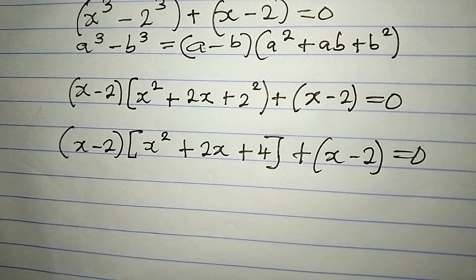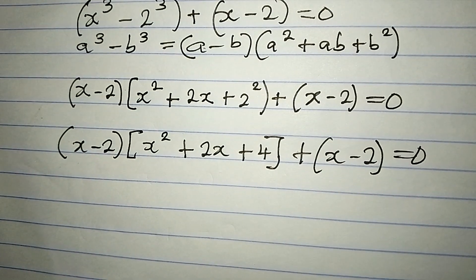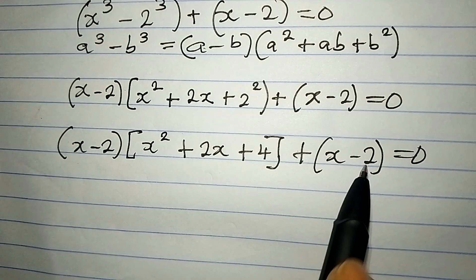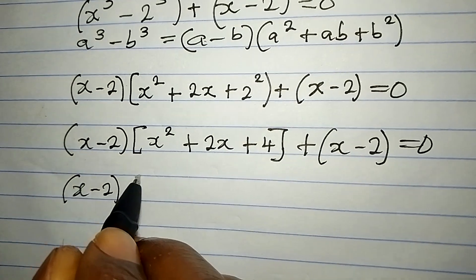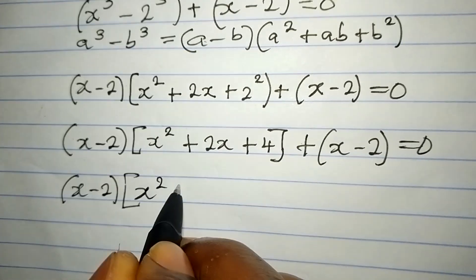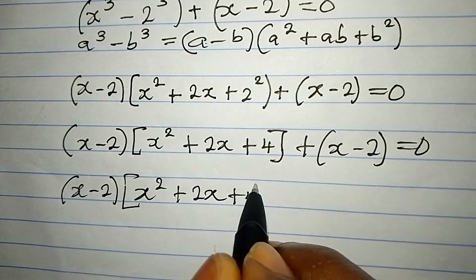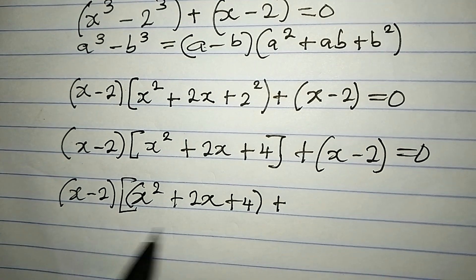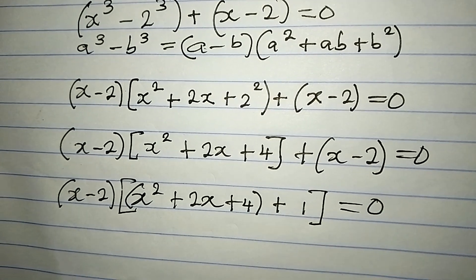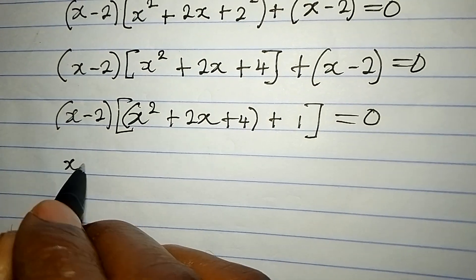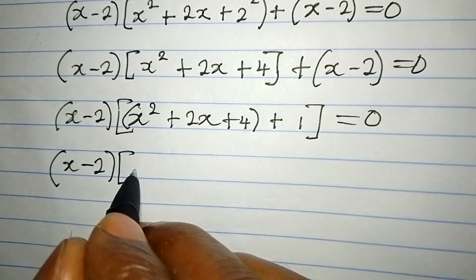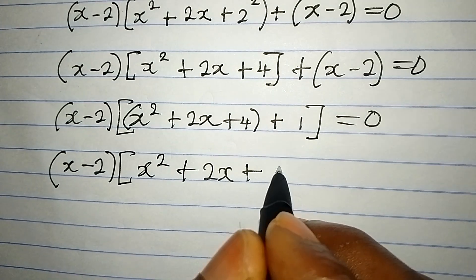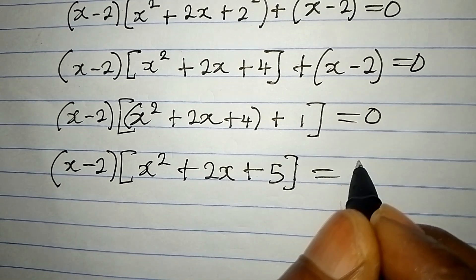Now we have (x − 2)(x² + 2x + 4) plus (x − 2) equals 0. At this point you will be tempted to open the bracket, but that is wrong. What you should do is factorize x minus 2, because it appears in both terms. So x minus 2 comes out as a common factor, giving us (x − 2)(x² + 2x + 4 + 1), which simplifies to (x − 2)(x² + 2x + 5) = 0.